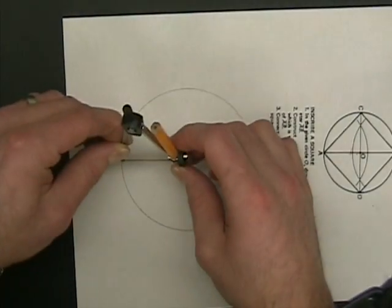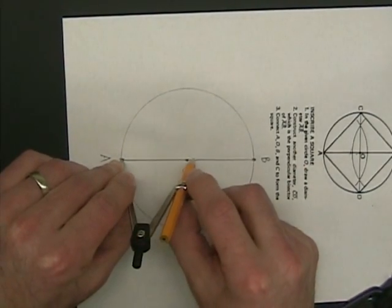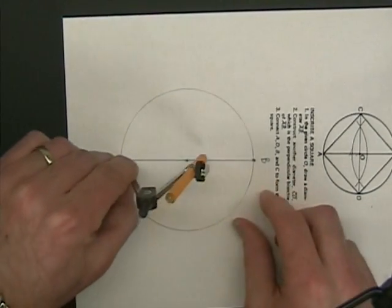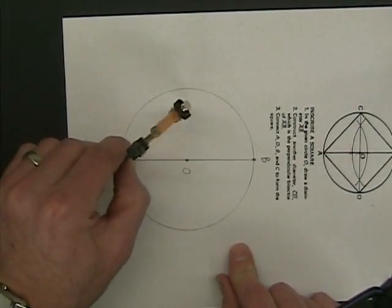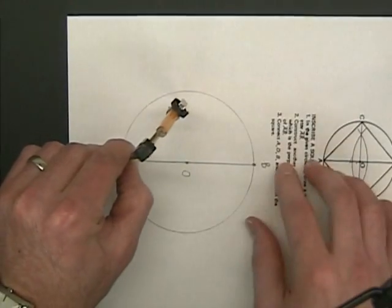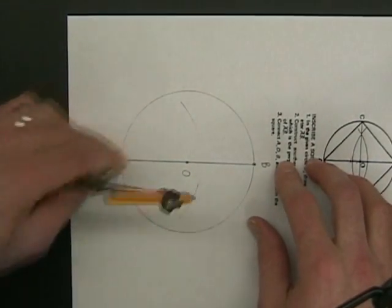So I'm going to put my compass point on A, and I'm going to open up my compass wider than halfway. Halfway would be point O, so I'm going to open up past O, and I'm going to make an arc above and below AB.